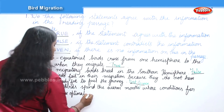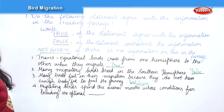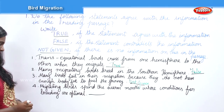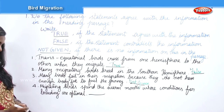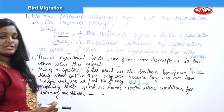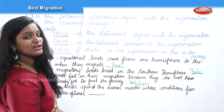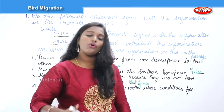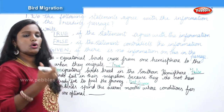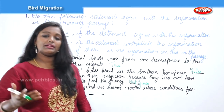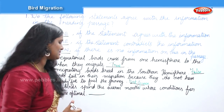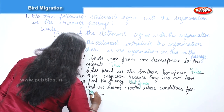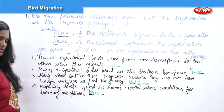Statement: 'Migrating birds spend the warm months where conditions for breeding are optimal.' True or false? The passage repeatedly discusses breeding options for migrating birds and how far they travel for breeding. This is definitely a correct statement, so the answer is TRUE.